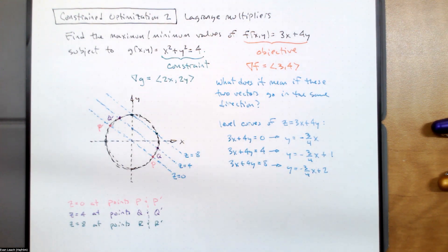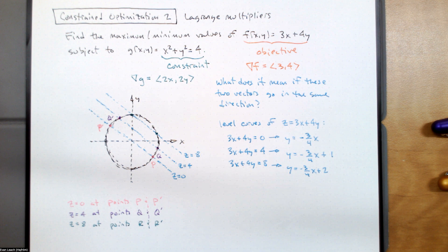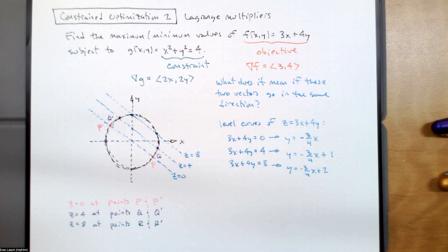There's a place where z = 8. So where are we going to find the maximum value? What level curve are we looking for? Describe it in terms of the constraint.